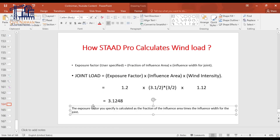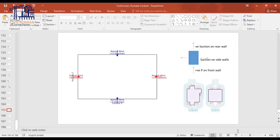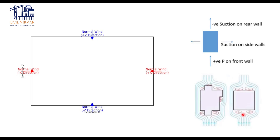So that's how STAAD is calculating your values. The exposure factor you specify is calculated as the fraction of the influence area times the influence width for the joint. Now to give you a more specific idea, consider the wind behavior — when wind blows on a particular structure, if the wind direction is positive X, you can see that from here it goes outwards along the sides, creating suction on the side walls.